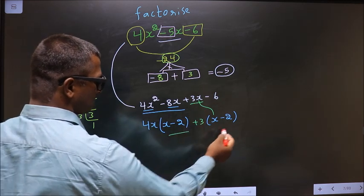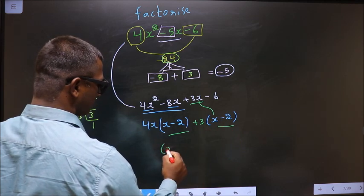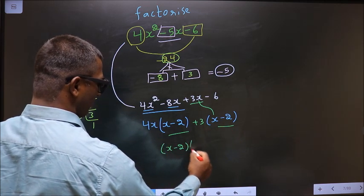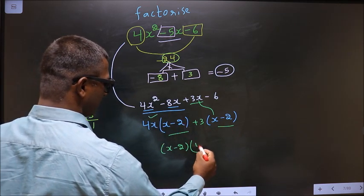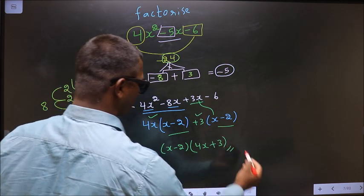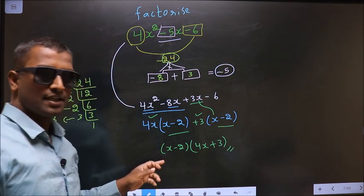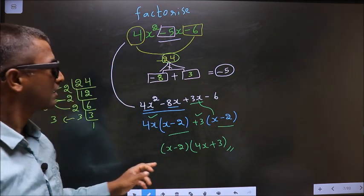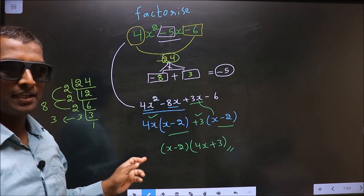So outside is left plus 3. Now, you take x minus 2 common. So here you are left with 4x and here you are left with plus 3. This is our answer. Am I clear?